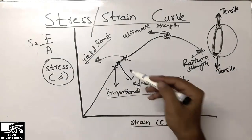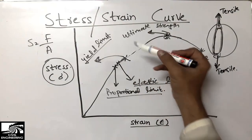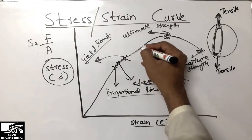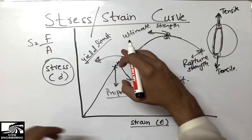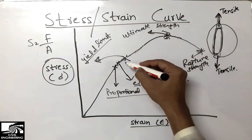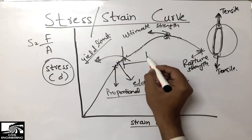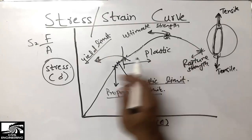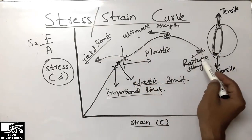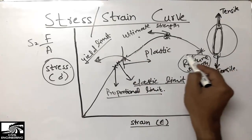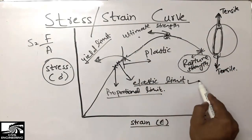The entire region after the elastic limit is called plastic deformation. Because the elastic limit has been crossed, the bar will not return to its original position. The whole scenario after the elastic limit — through the yield limit, up to the ultimate strength, and down to the rupture strength — is the plastic deformation range of the steel bar.